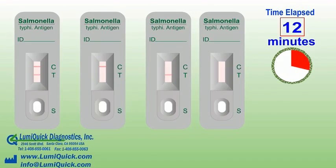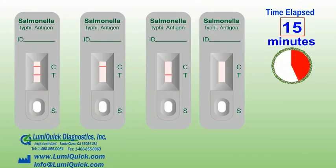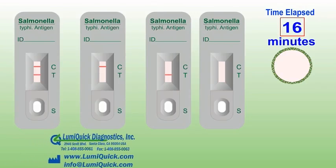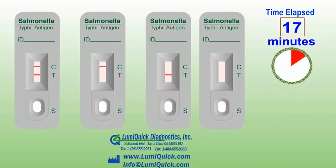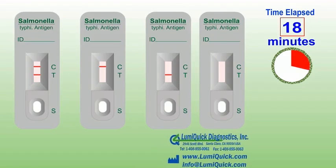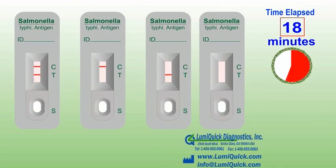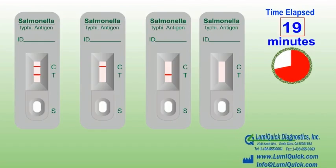The bacteria enter the mesenteric lymph nodes, where they multiply, and via the thoracic duct, enter the bloodstream. A transient bacteremia follows, during which the bacilli are seeded in the liver, gallbladder, spleen, bone marrow, lymph nodes, and kidneys, where further multiplication takes place. Towards the end of the incubation period, a mass bacteremia occurs from these sites, heralding the onset of clinical symptoms.